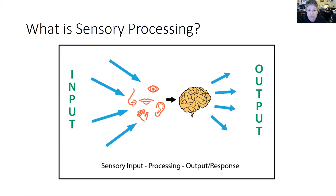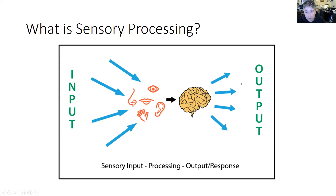So first of all, what is sensory processing? Sensory processing is the ability of the body to take in information through the various organs, send it to the brain, the brain processes it, and then it sends out a response. It could be a motor response, a visual response, your mouth watering, or going to the bathroom — some sort of response from the different parts of the body.